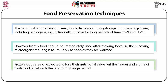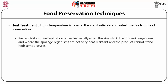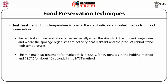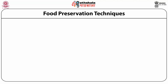Frozen foods are not expected to lose nutritional value, but the flavor and aroma of fresh food is lost with longer storage. Next, heat treatment using high temperature is one of the most reliable and safest methods of food preservation. Pasteurization is used especially to kill pathogenic microorganisms when spoilage organisms are not very heat-resistant. The minimal heat treatment for market milk is 62.8°C for 30 minutes (holding method) or 71.7°C for 15 seconds (HTST — high temperature short time). Steam under pressure using a pressure cooker kills all vegetative cells and spores.